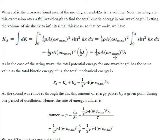The potential energy associated with one wavelength is equal to the kinetic energy. So the total energy associated with one wavelength equals the kinetic energy plus the potential energy, which is simply double the kinetic energy expression. Therefore: E_lambda = (1/2)·rho·A·(ω·S_max)²·lambda.